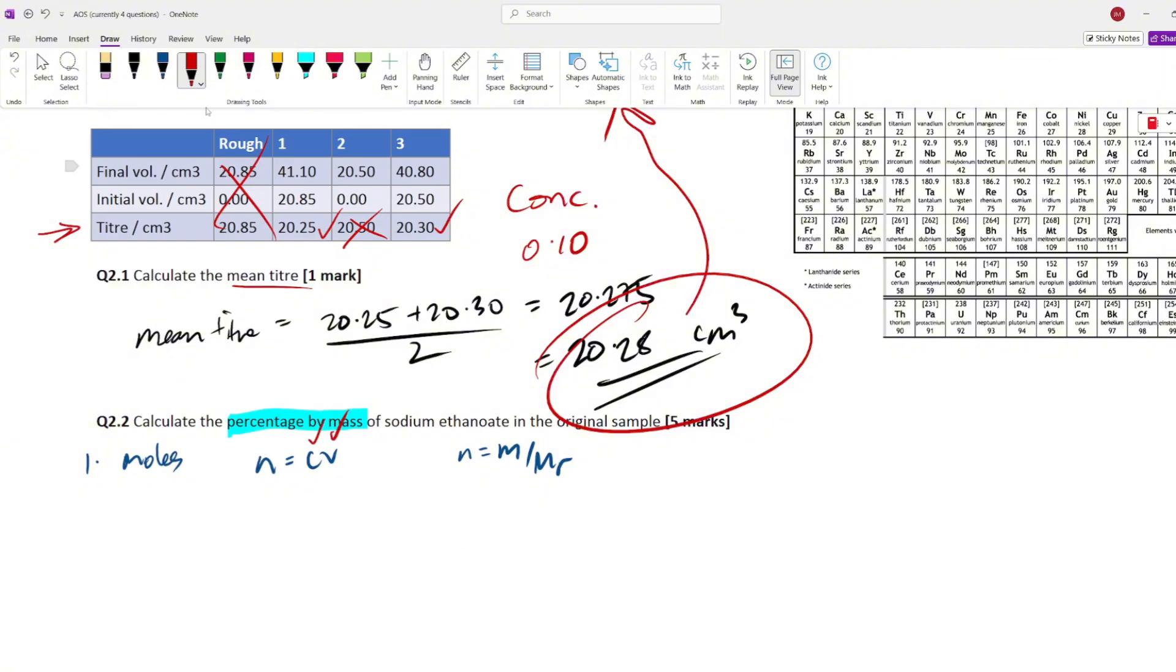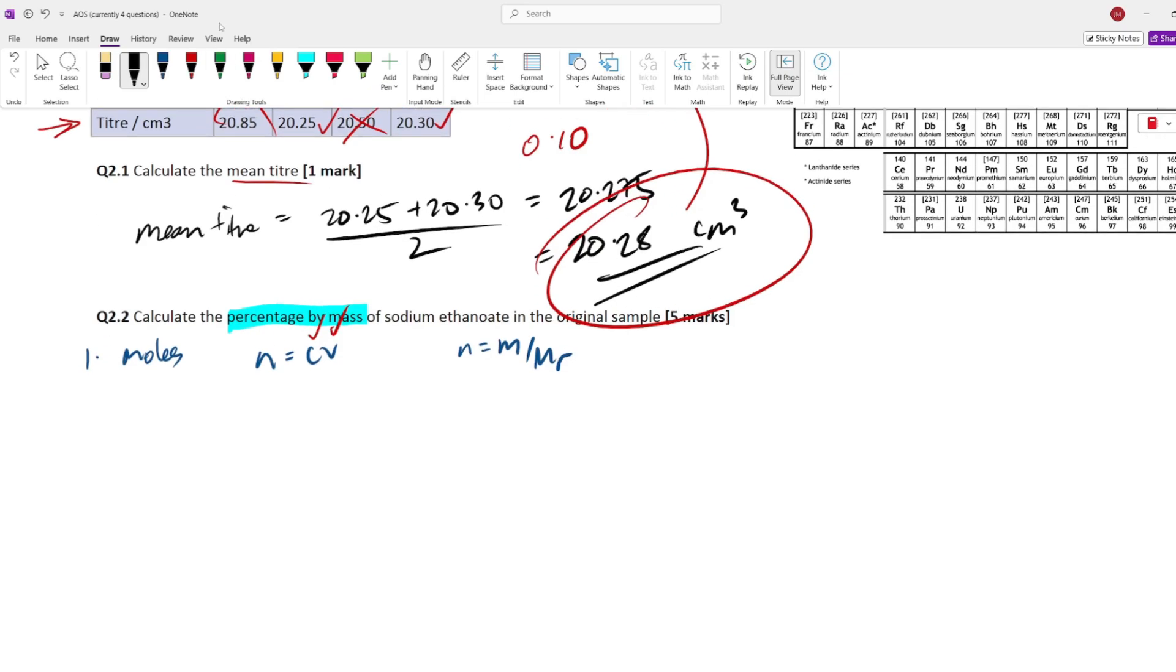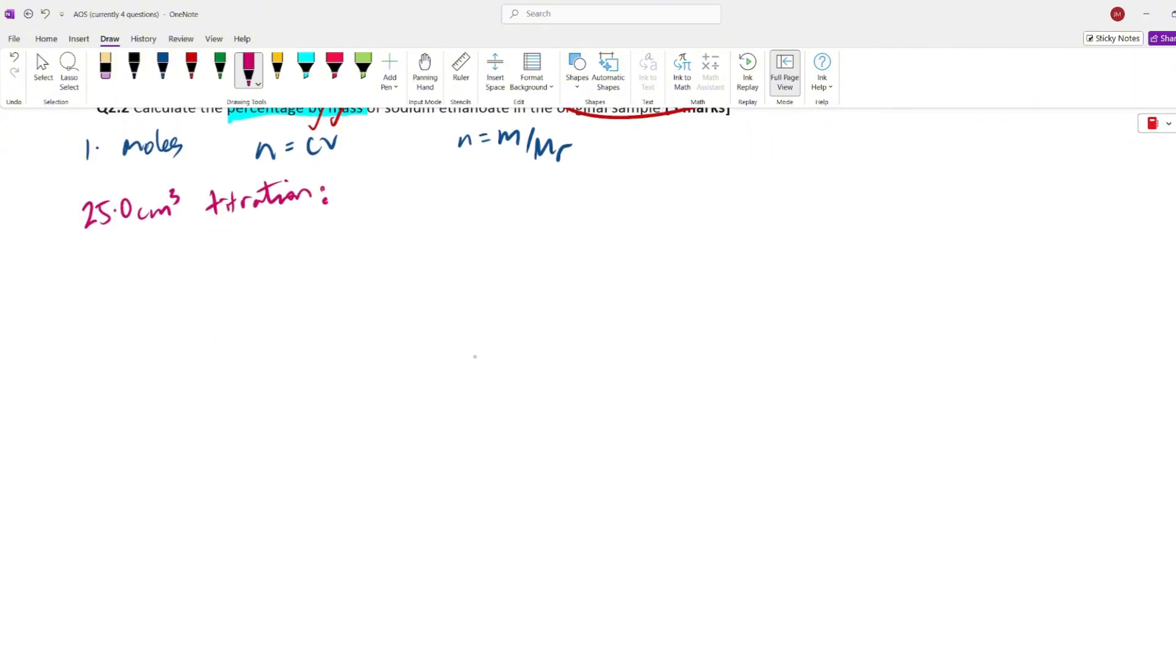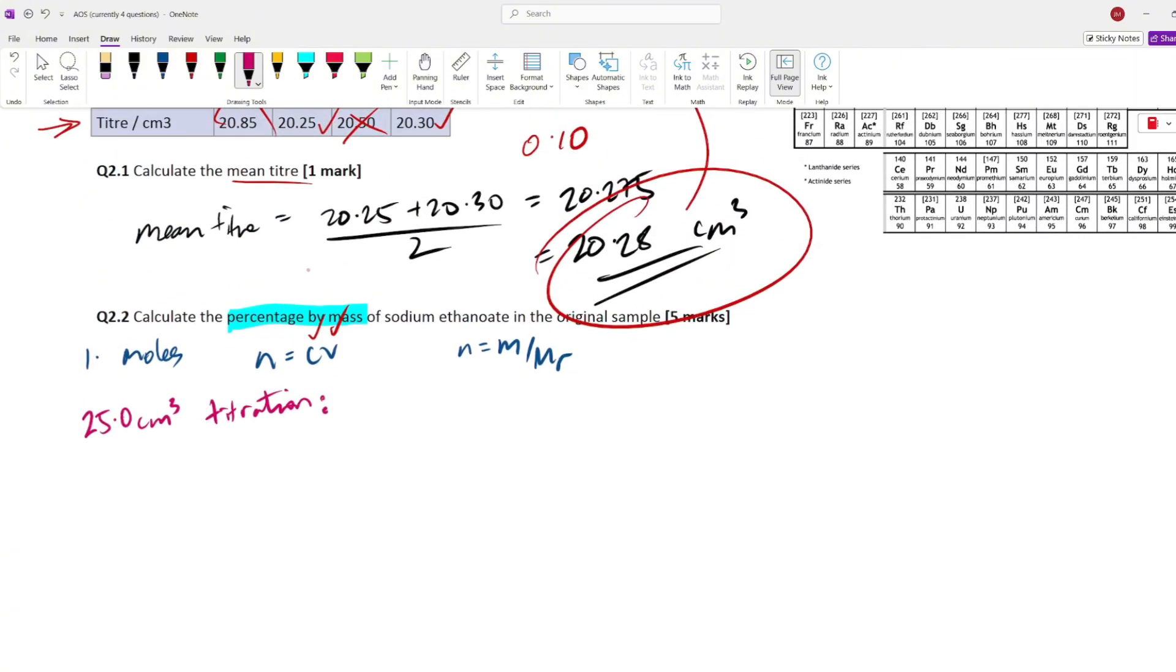We know that's 20.28, done. We also know what the concentration is, 0.5 that's given to us. So, if you want to use one of these equations, you have to know two of the three variables. We have both of these so we can work out the moles. So, that's what I'm going to do for step one. I'm going to make another note here for you guys, just so it's crystal, crystal clear. This is for the 25 centimeter cubed titration.